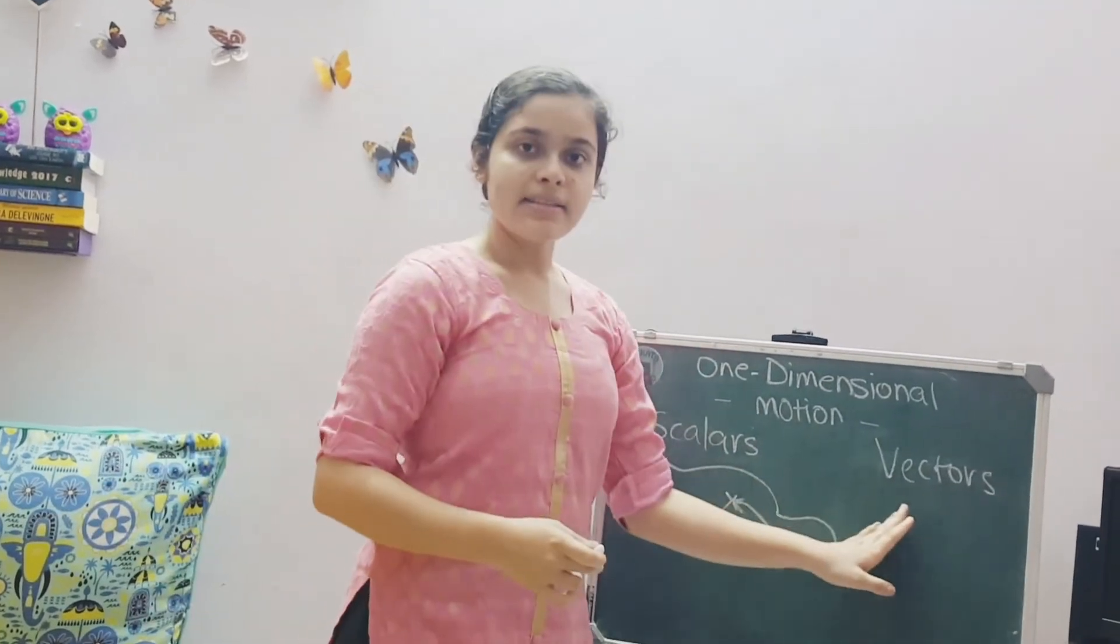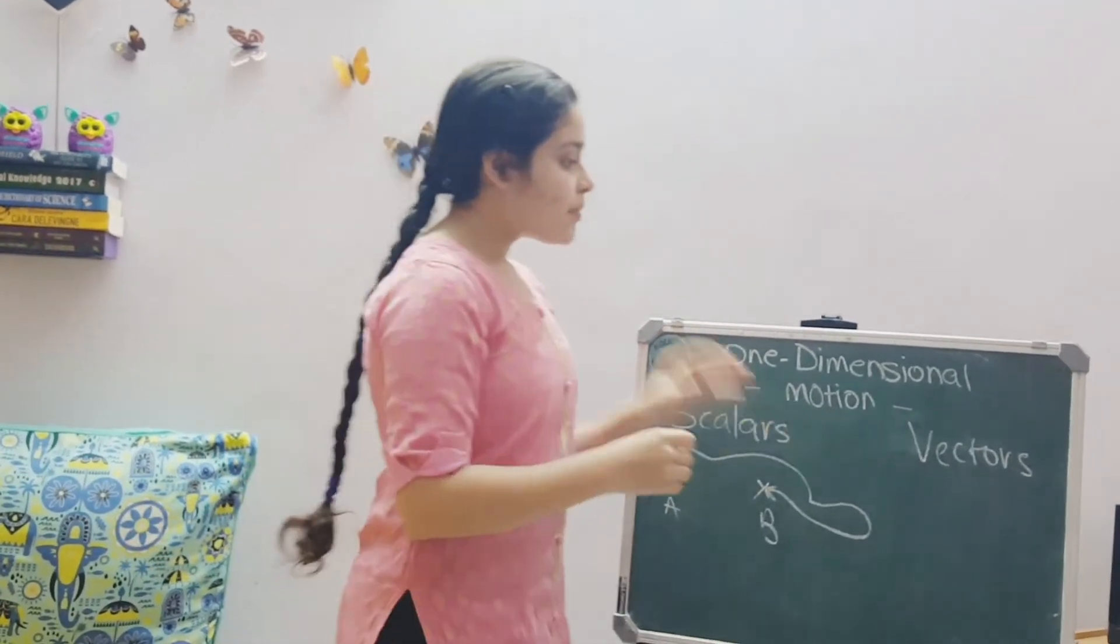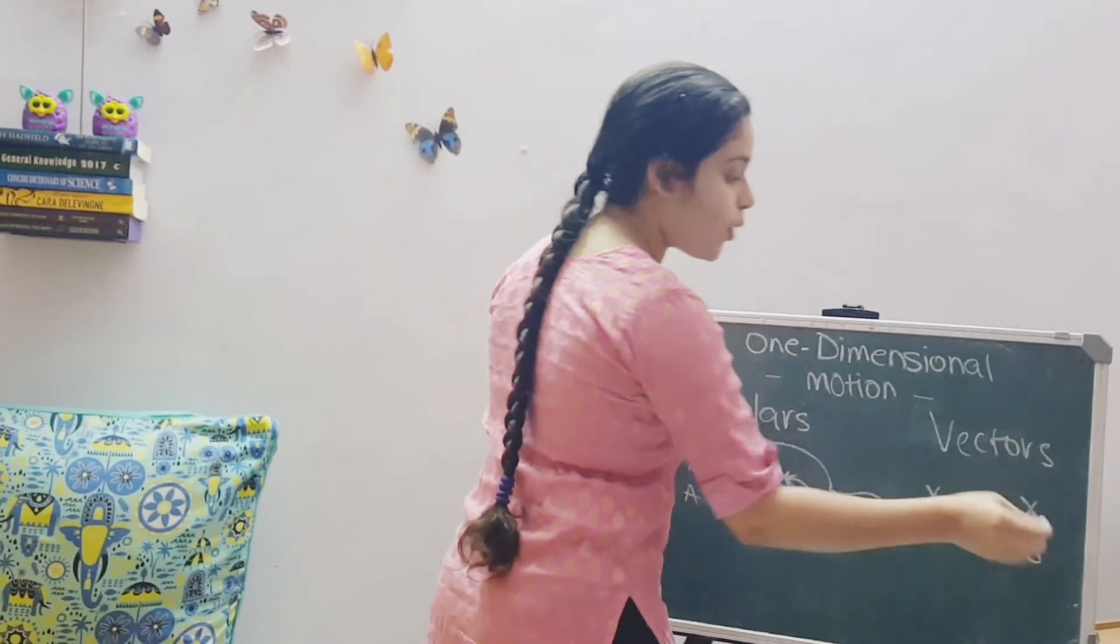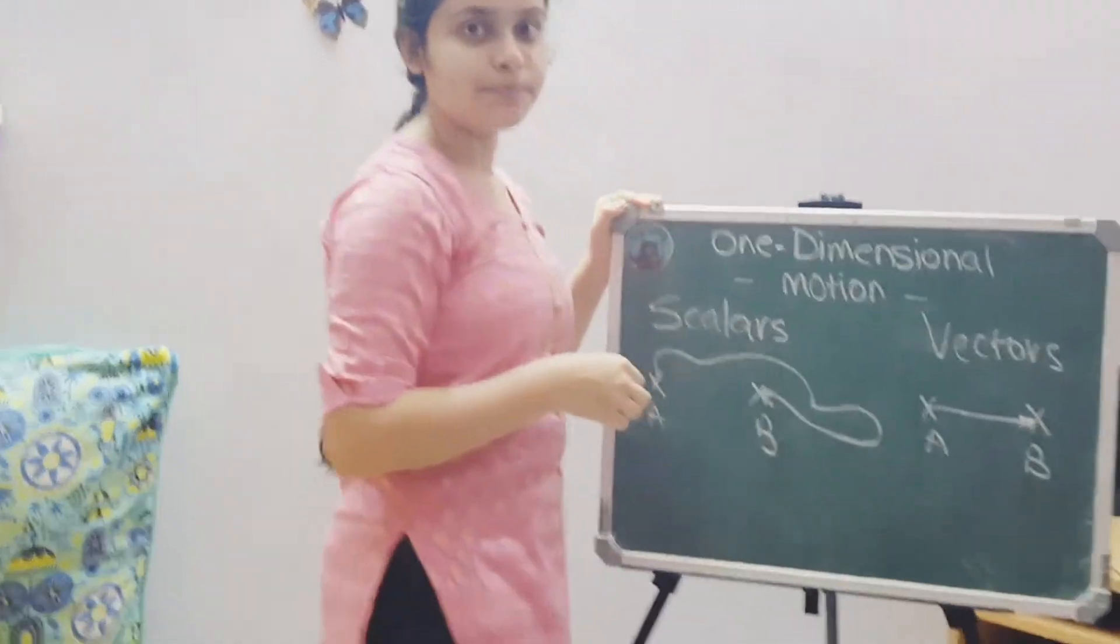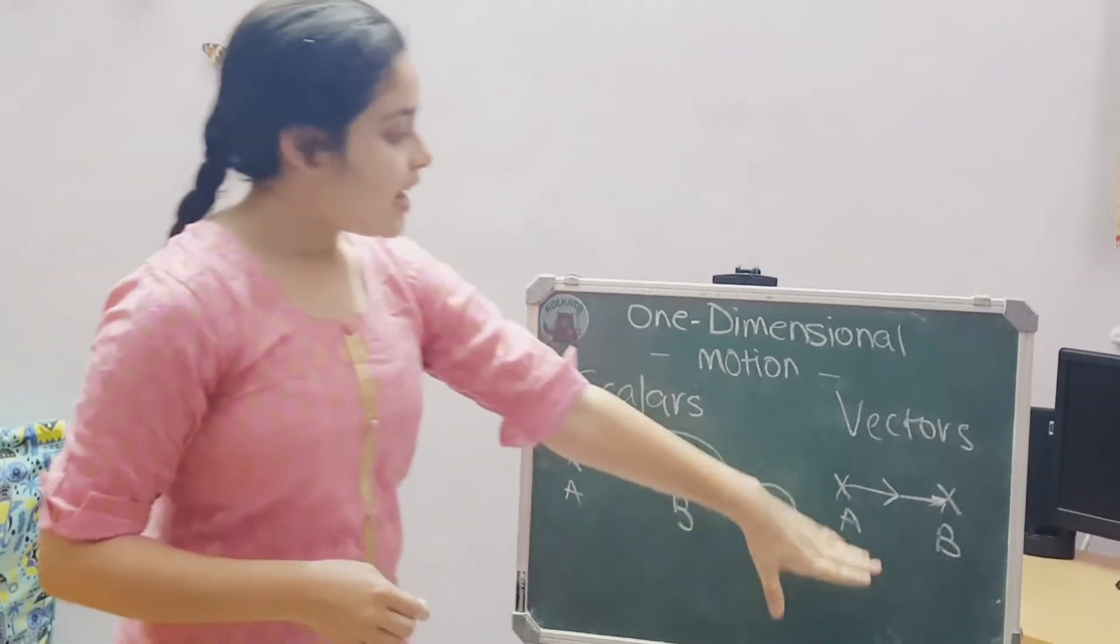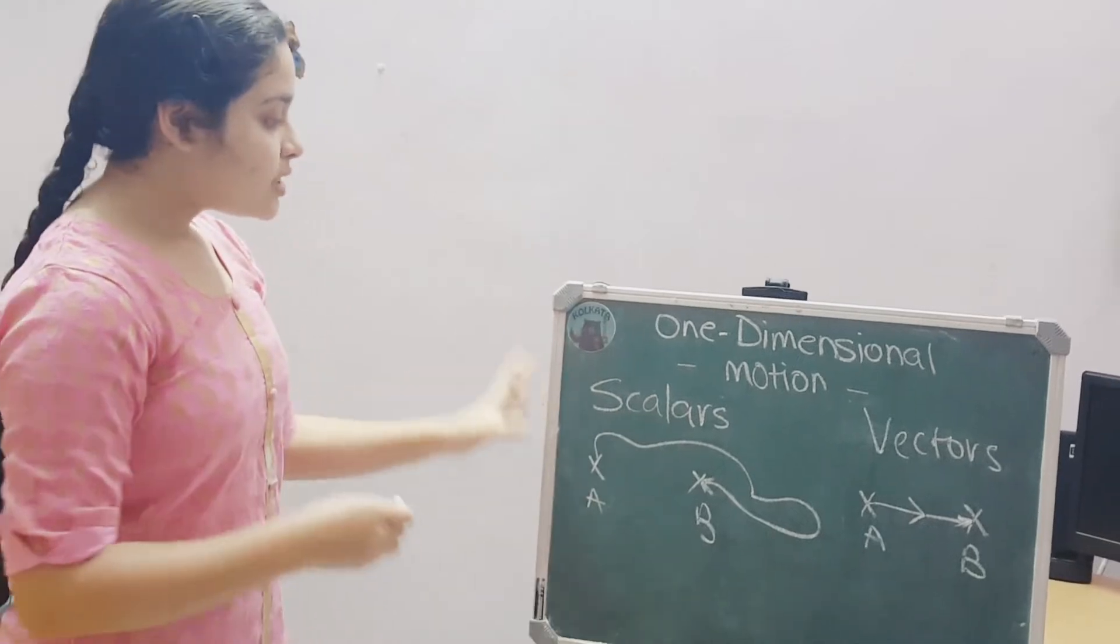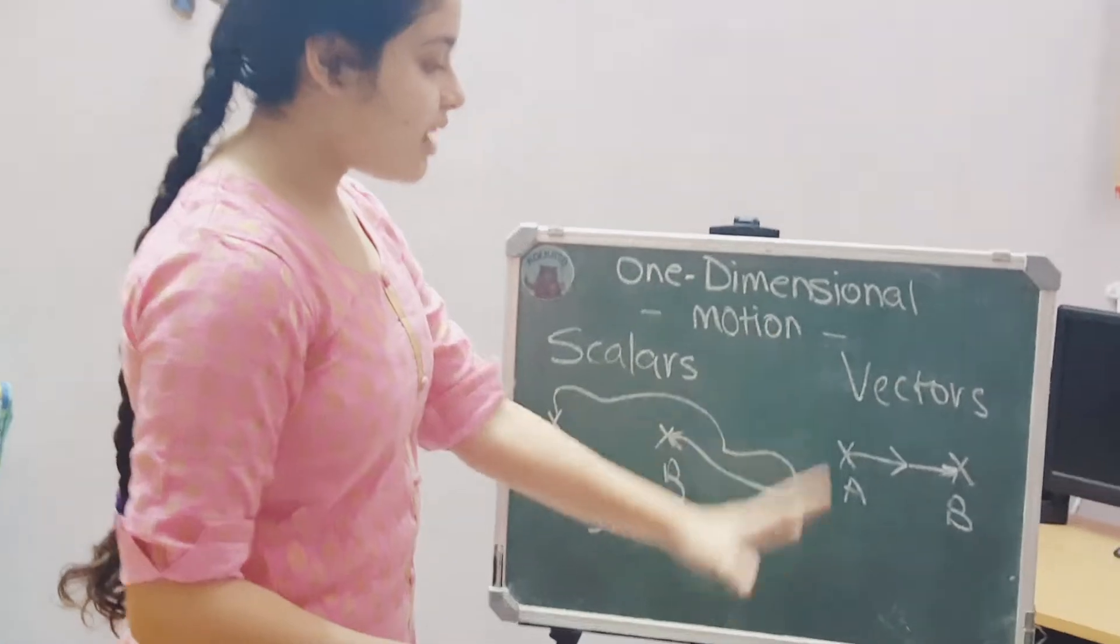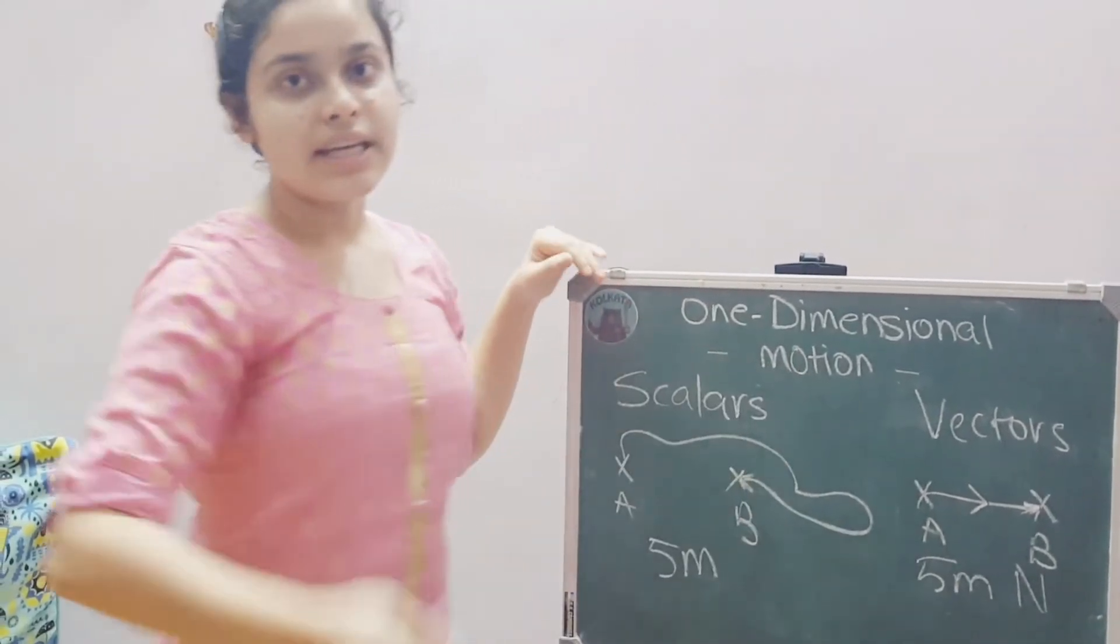Coming to vectors, vectors have both magnitude as well as direction. So, I said when I talk about displacement, I will be moving from point A to point B. I said from point A to point B. That is in this direction. We denote it by an arrow. Now, vectors are usually examples like displacement and velocity. So, scalars can be written like I travelled 5 meters. But when I talk about vectors, I will say 5 meters towards the north, south, east or west.